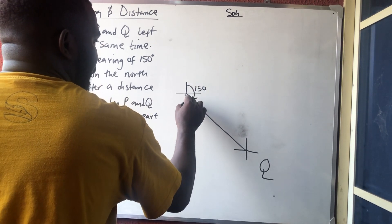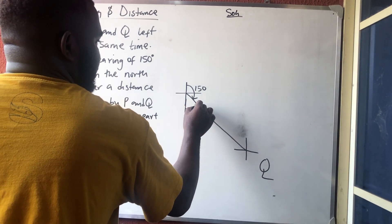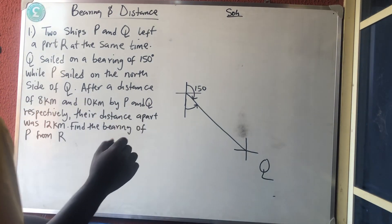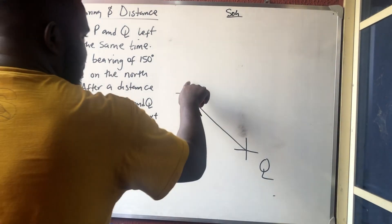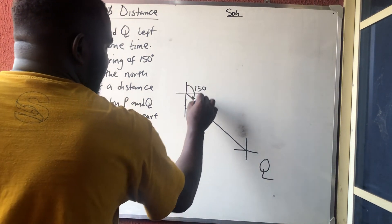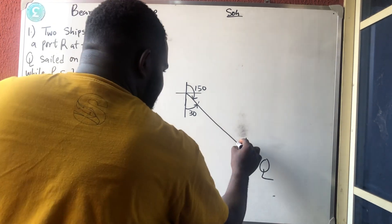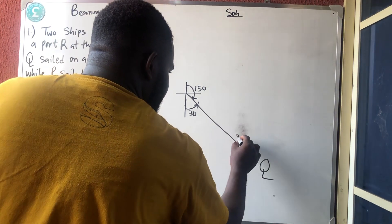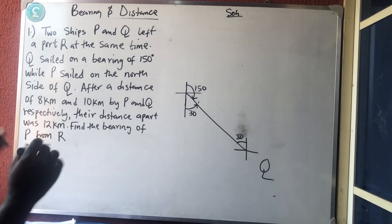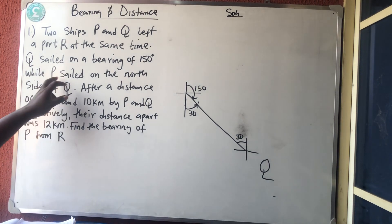I need the small angle with the vertical, as I taught you in the first and second video. It should be 180 minus 150, which is 30°. From here to here is 180, so if this side is 30°, automatically the other side is also 30°. That's that.